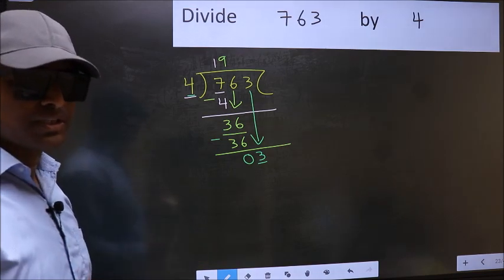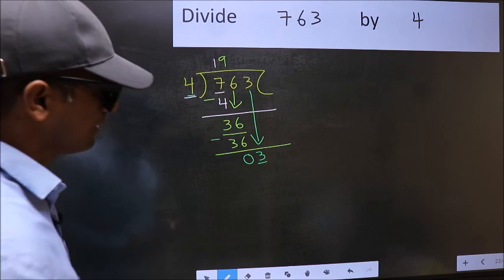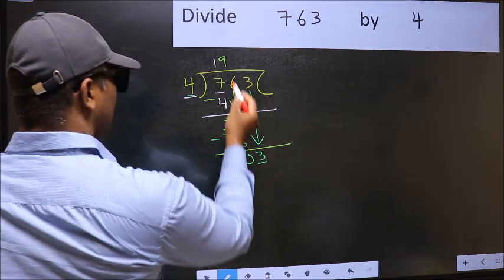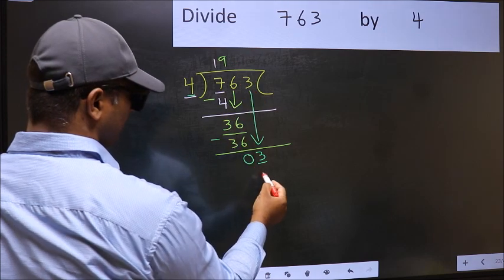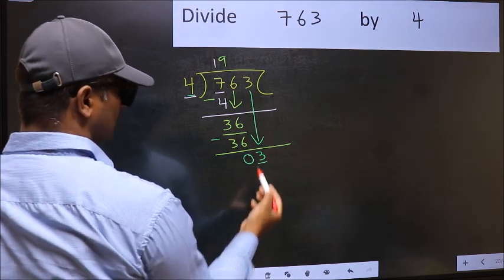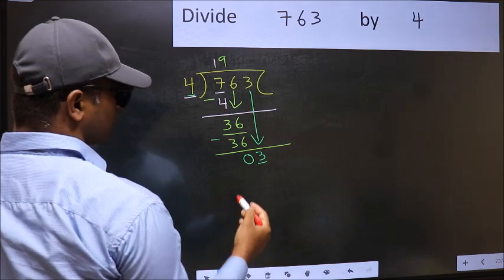Instead, what you should think of doing is, what number should we write here? If I take 1 here, I will get 4. But 4 is larger than 3. So what we should do is, we should take 0.